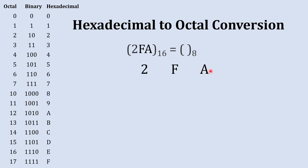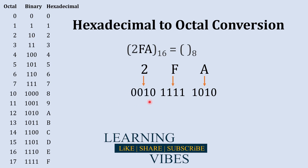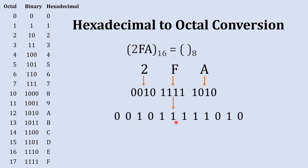First we'll write our hexadecimal number and start with A — the binary equivalent to A is 1010. The next number is F — the binary equivalent to F is 1111. The next number is 2 — its binary equivalent is 10, but instead of writing 10 we'll write 0010, padding it to four digits for the same reason as before.